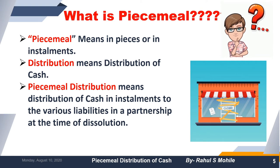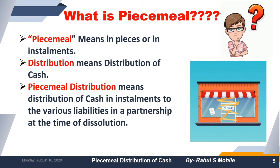Piecemeal distribution means distribution of cash in installments, and this normally happens at the time of dissolution. Whenever we are closing or winding up the business, the problem arises that our liabilities are overdue. We have assets, so we will be realizing those assets, and whatever amount we get will be paid to the liabilities in a systematic manner following various steps.